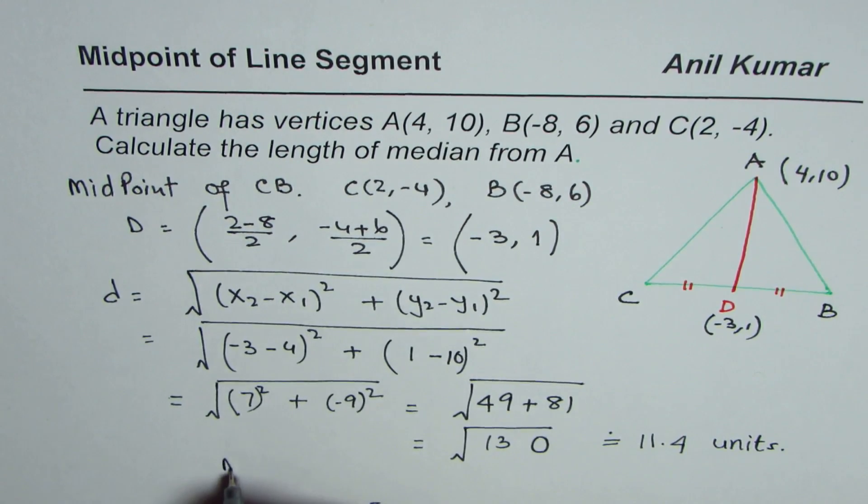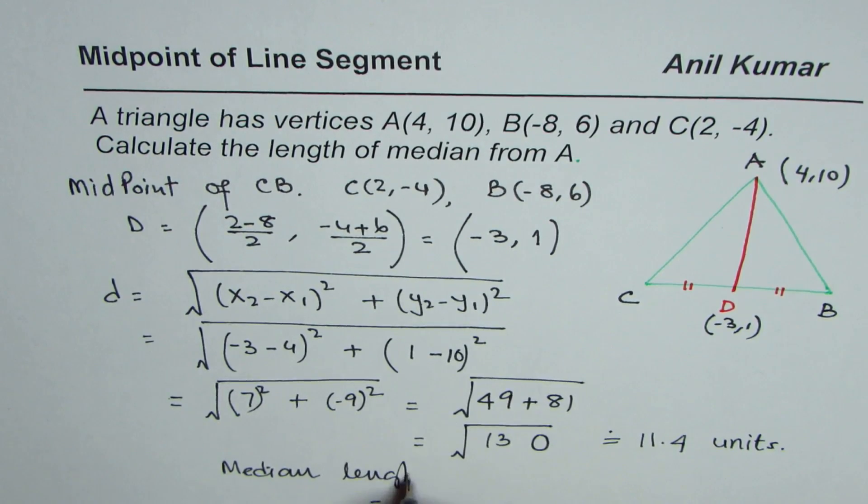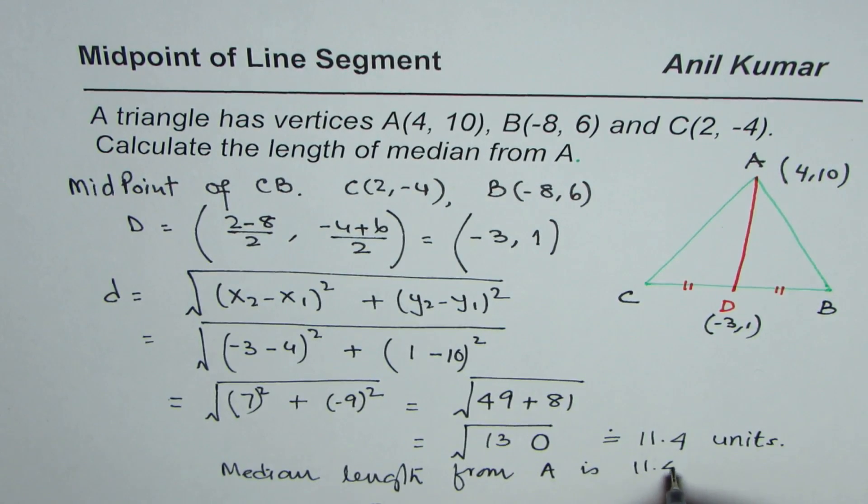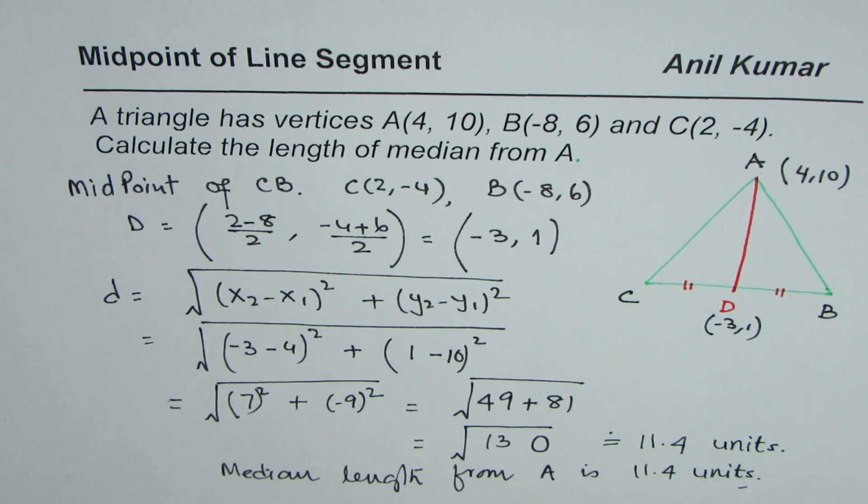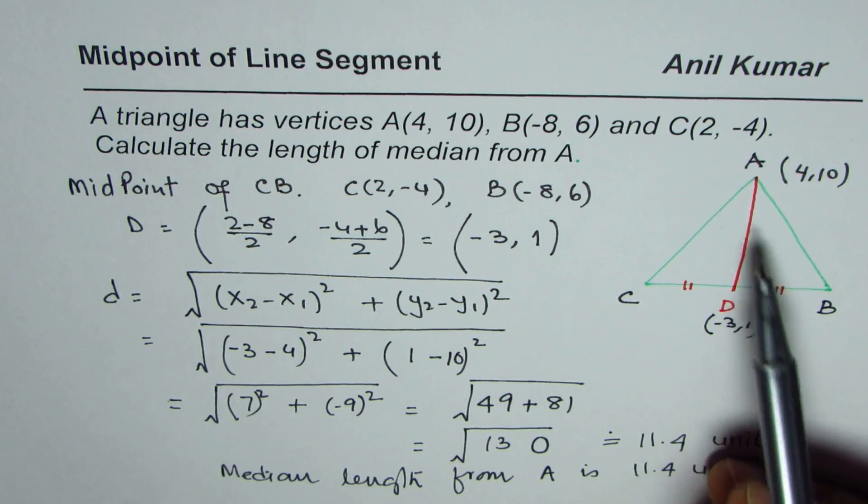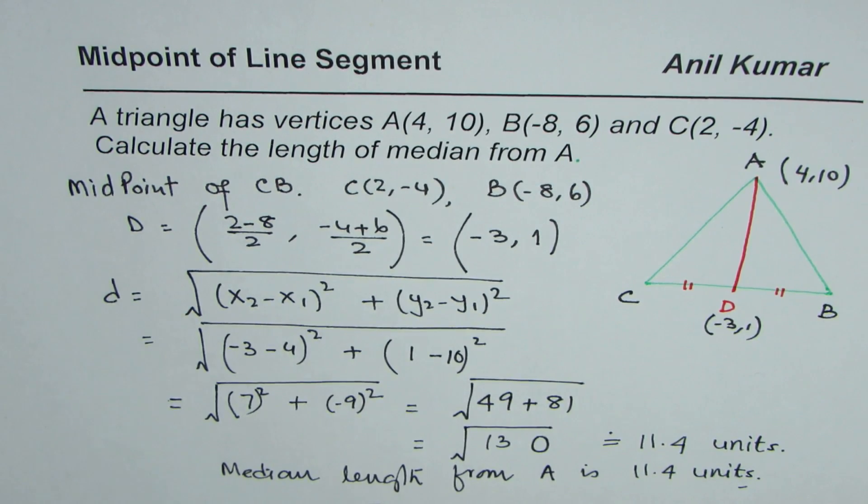So the median length from A is 11.4 units. That is the approximate value. So that is how you can find the length of the median. Remember, a median is a line joining the vertex with the midpoint of the opposite side. I hope that helps.